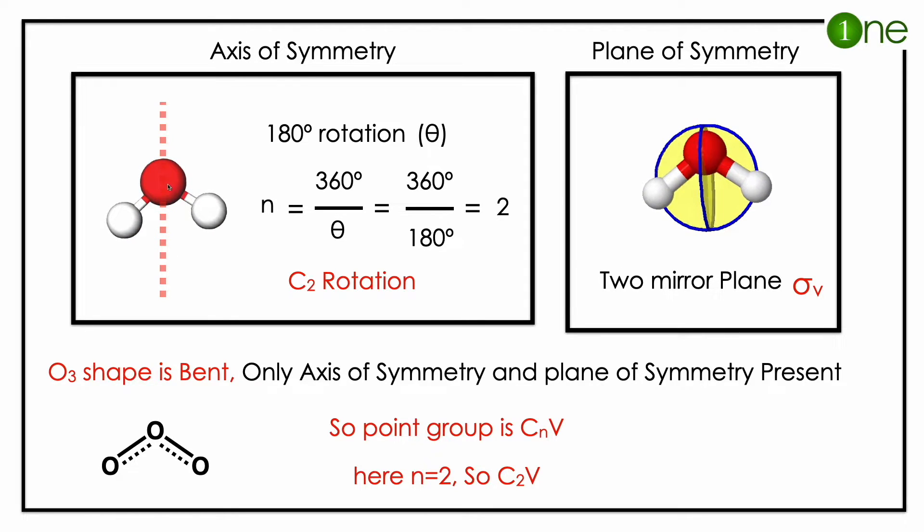According to group theory, you have to find n. n equals 360 divided by theta, which gives 2. n is 2. And it has a mirror plane which is parallel to the principal axis, in the same direction as the C2 axis. So it is vertical, sigma v.